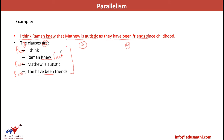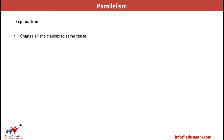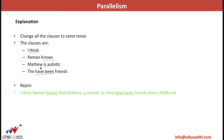To correct the sentence, I change the structure of the second clause to present tense — changing 'knew' to 'knows,' writing 'Raman knows.' Now all clauses are in present tense: 'I think' (present), 'Raman knows' (present), 'is autistic' (present), 'have been friends' (present). Joining the clauses, the correct sentence is: 'I think Raman knows that Matthew is autistic as they have been friends since childhood.'